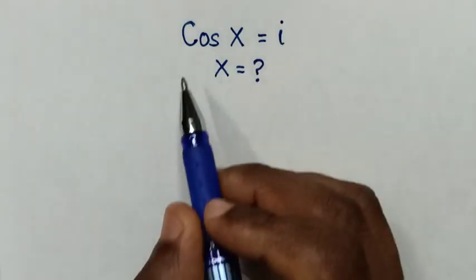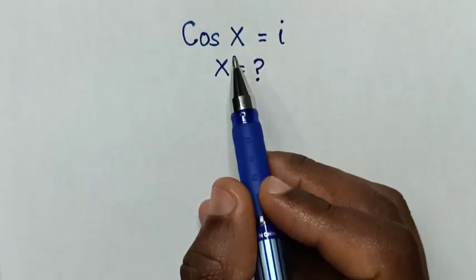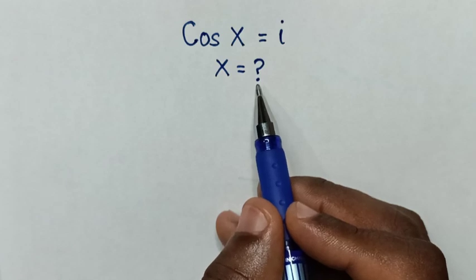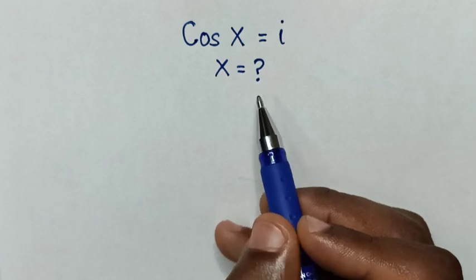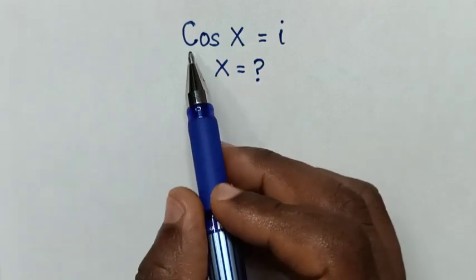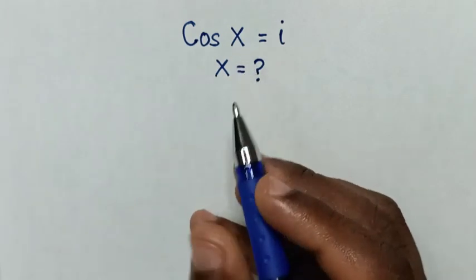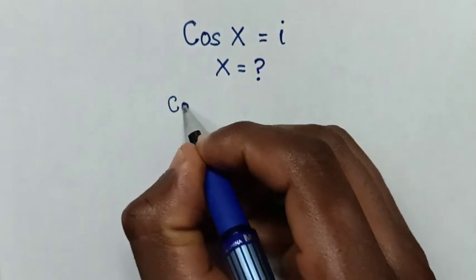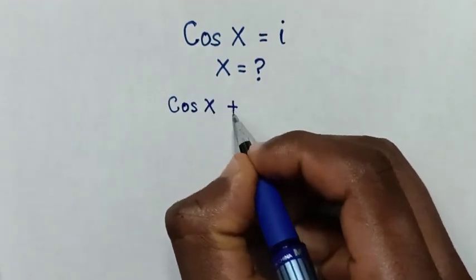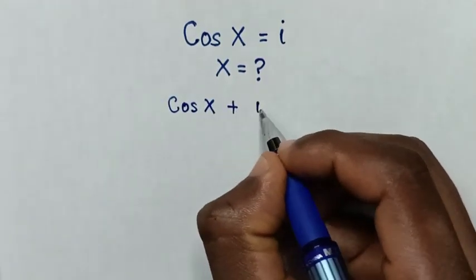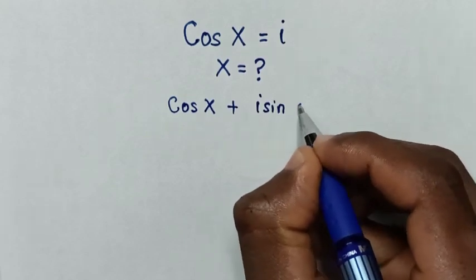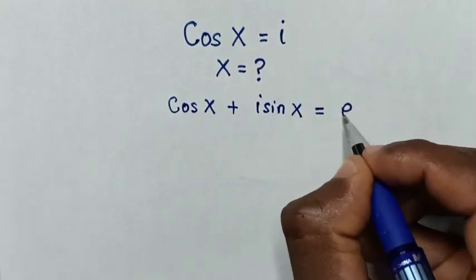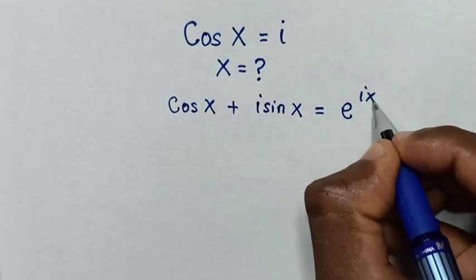Hello. How to solve cos of x is equal to i — to find the value of x from this equation. So from here, for cos of x we'll apply the rule, which is cos of x plus i sine of x is equal to e to the power of ix.